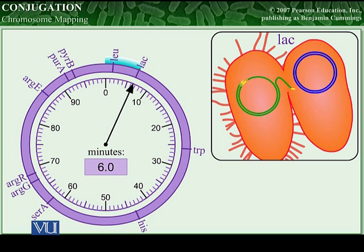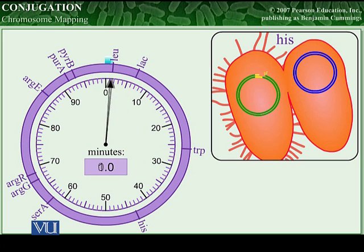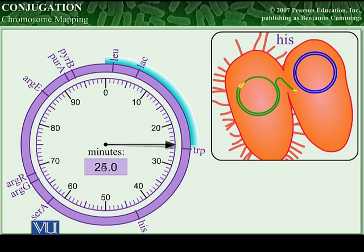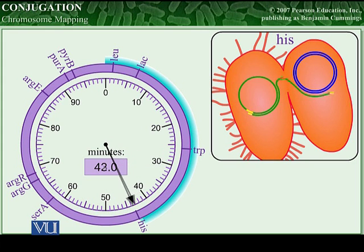Conjugation has to occur for at least six and a half minutes for the lac operon to transfer, telling us the lac operon is farther from the fertility factor than the leucine gene. It takes over 40 minutes for the histidine operon to transfer, so it must be nearly halfway around the chromosome from the fertility factor. Thus, the process of conjugation can be used to help geneticists map the genomes of bacteria.